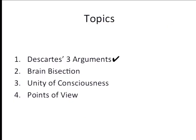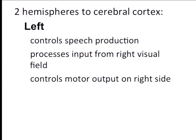Let's look at Nagel's way of getting at the notion of unity of consciousness. There are some basic points about the cerebral cortex. The cerebral cortex comes in two bits — a left bit and a right bit. The left cortex controls production of speech, takes in stuff from your right visual field, and controls motor output for right-side limb movements — your right arm and right leg.